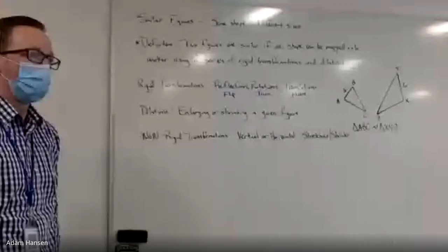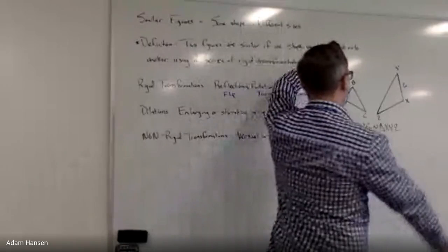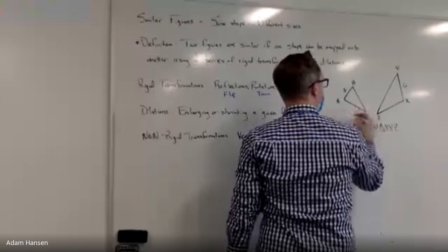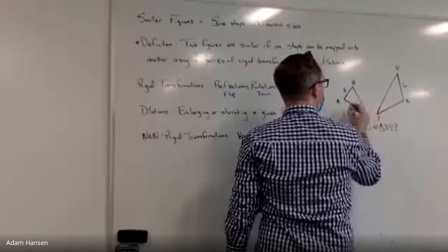3 to 6. What did I multiply by? Times 2. Okay, so if I do side AC here, I call that 4. That means that side XZ has to be 8.